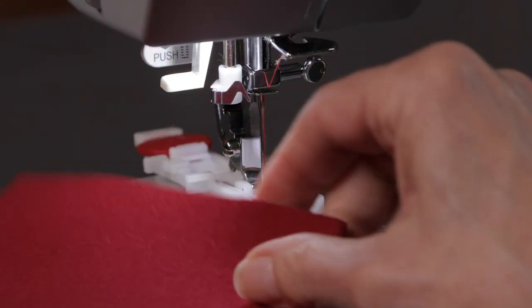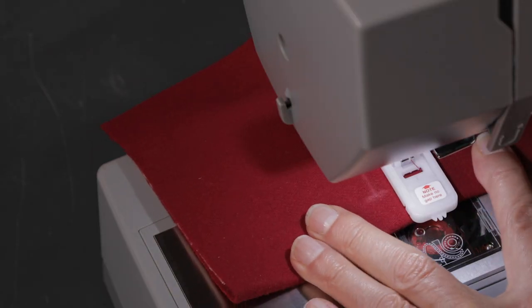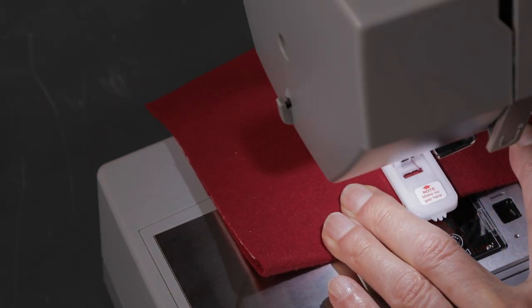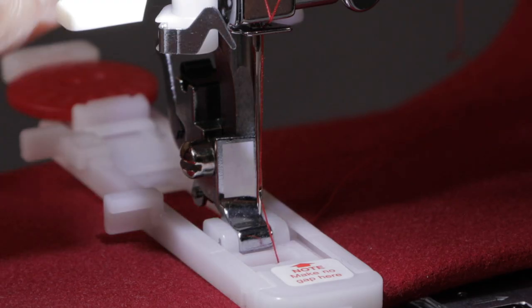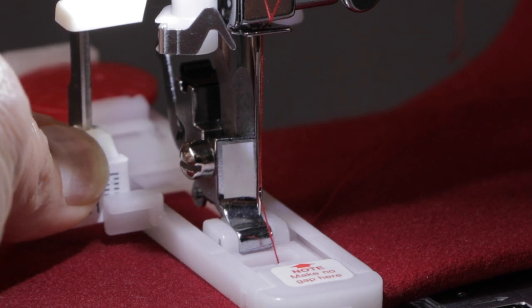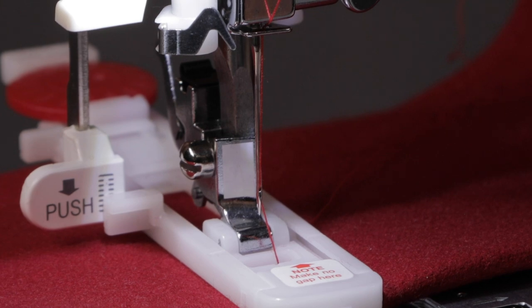Next, we're going to place our fabric, lining it up with the marking that we drew on the fabric. We want the sideways line to line up with the hole in the buttonhole foot. Lower the presser foot lifter, then bring down your buttonhole lever. Make sure it's pressed all the way down, and we're ready to start sewing.